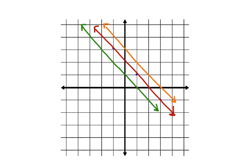What would a family of lines look like if the slope was all the same? You may already have an idea, but let's look at a coordinate grid. Here's a family of lines where the slope is all the same. Notice that all of these lines are parallel.